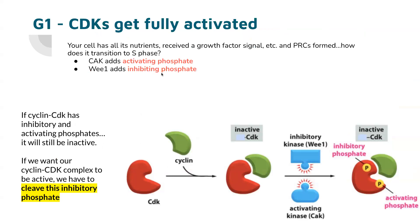For CDK full activation in G1: if cyclin-CDK has both inhibitory and activating phosphates, it'll still be inactive. When we want our cyclin-CDK to be active, we're going to cleave the inhibitory phosphate off — that inhibitory kinase is Wee1. This only happens when the cell makes sure that it has the right amount of nutrients, it has growth factor signals, and the pre-RC should be formed before full activation of the CDK.